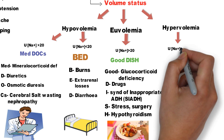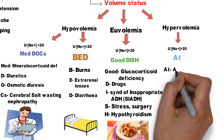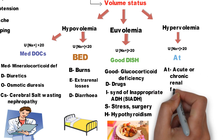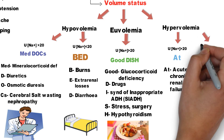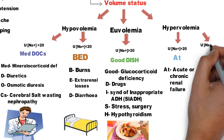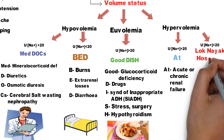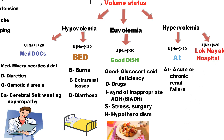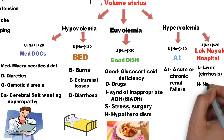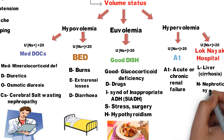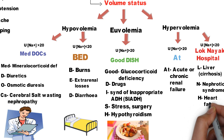In hypervolemia with urinary sodium more than 20 mEq/L, the cause is acute or chronic renal failure. If urinary sodium is less than 20 mEq/L, remember with the mnemonic Lokniak Hospital: L for liver cirrhosis, N for nephrotic syndrome, H for heart failure.